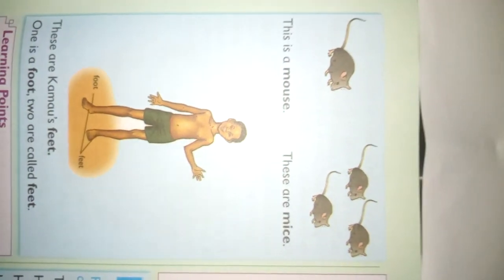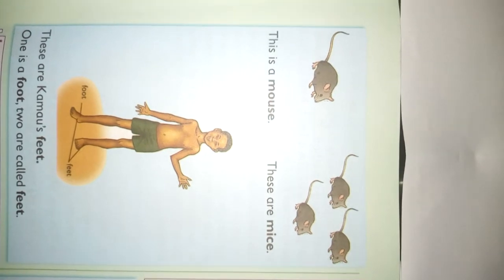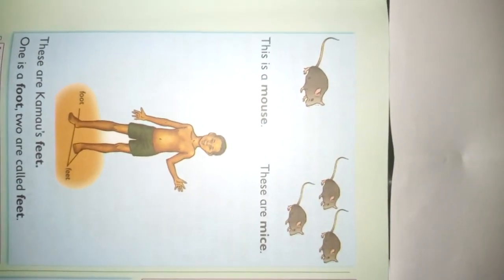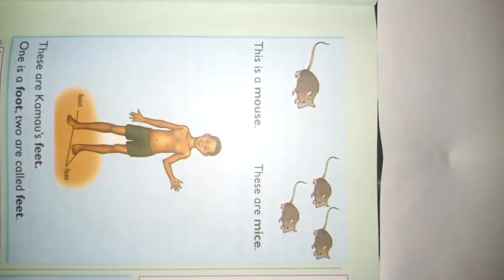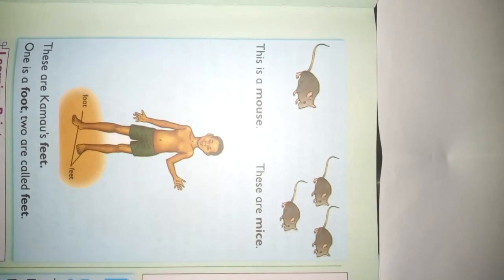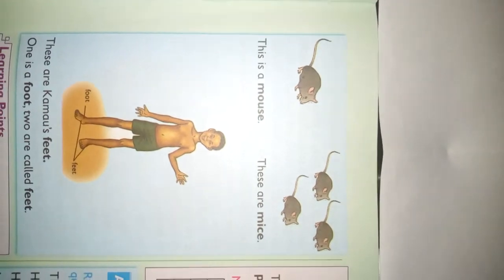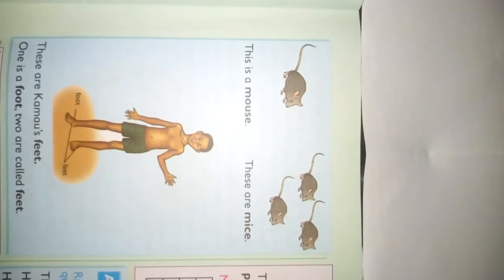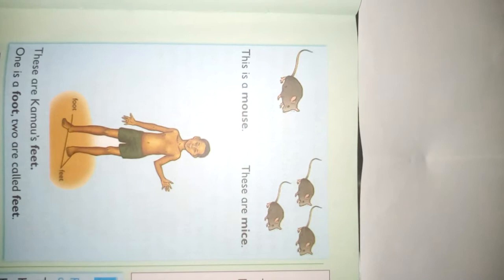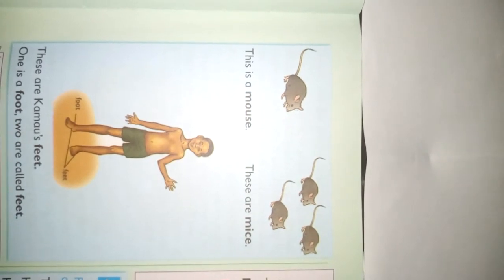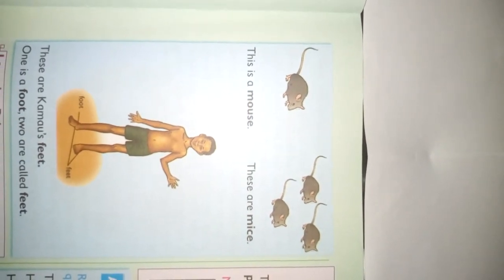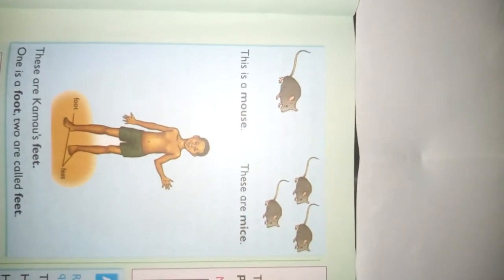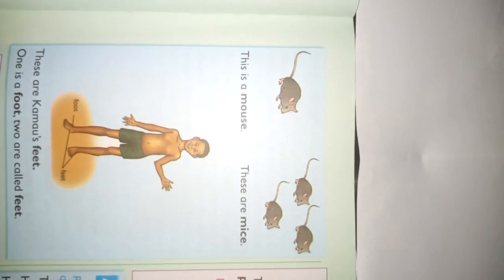If you want to talk about one mouse, you say 'This is a mouse.' When you have more than one, you say 'These are mice.' But you do not say 'these are mouses.'